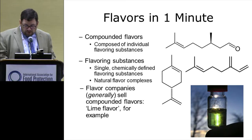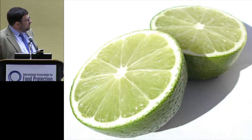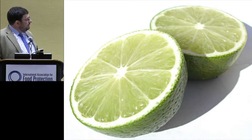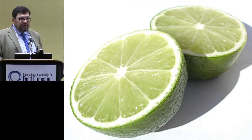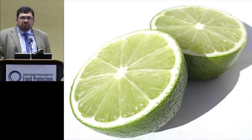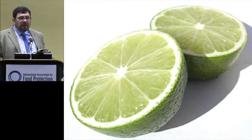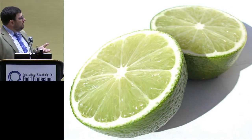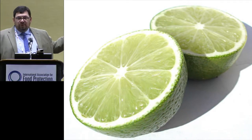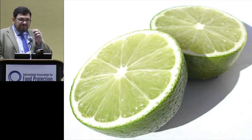A flavor house might start with a mixture of chemically-defined substances like citronellal, myrcene, or limonene, potentially with a lime oil or extract or distillate. You generate a compounded flavor that ends up in a consumer product — in this case, a lime-flavored potato chip. If this works well, the consumer eats it and thinks, wow, this tastes like lime. That's a perfect world.